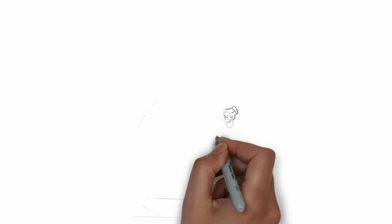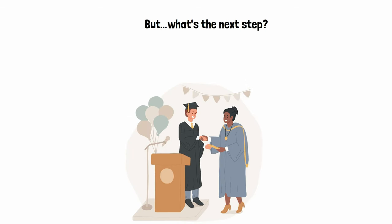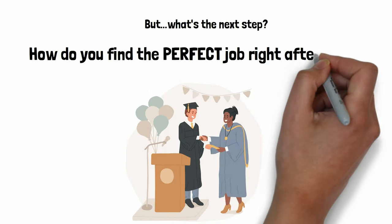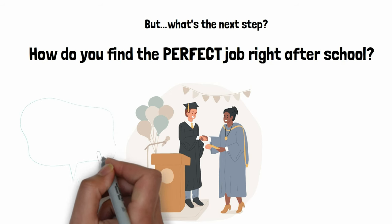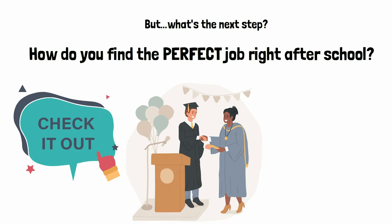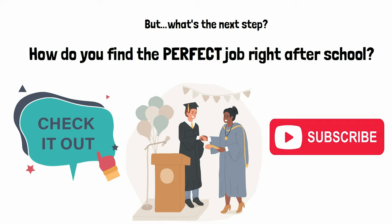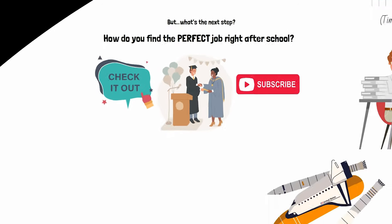And there you have it. All that's left is to cross that stage, shake hands with the chancellor, and celebrate your sweet, sweet victory. But what's the next step? How do you find the perfect job right out of school? Check out this video that details the three steps to getting your dream job out of any engineering degree. If you want more information on computer engineering or one of its subfields, check them out on our channel. Thanks for watching, everyone.